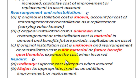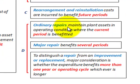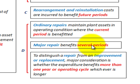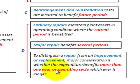For repairs, we have two types. Ordinary repairs maintain the plant's assets in operating condition where the current period is the beneficiary — generally within the yearly period. Major repairs benefit several periods, meaning several years or accounting cycles. The key distinction between a repair and an improvement or replacement is whether the expenditure benefits more than one year.